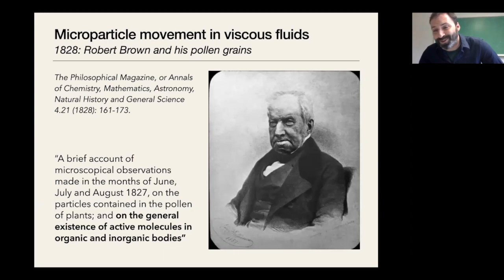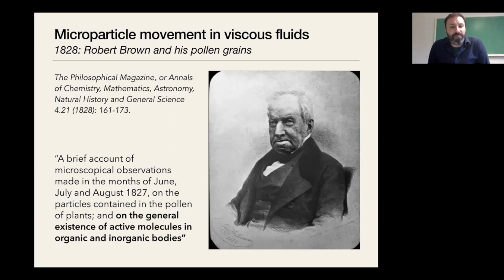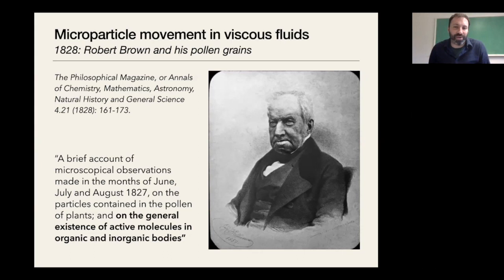So how do we go about building those models? I want to take a little time to talk about the history of modeling random movement. This is Robert Brown — Brown of Brownian motion. He published a paper in 1828. When probabilists tell each other bedtime stories, they say this continuous time random walk was first discovered by Robert Brown. He was a botanist looking at pollen grains.